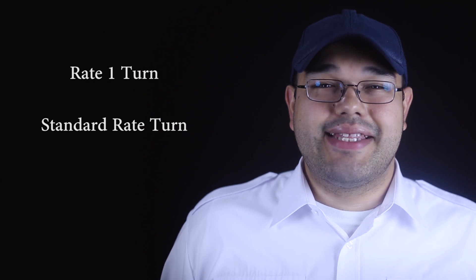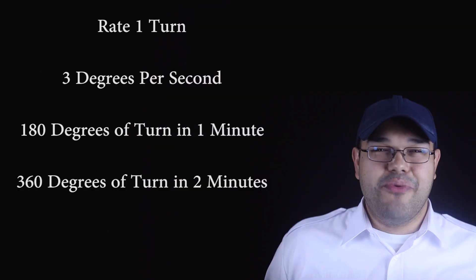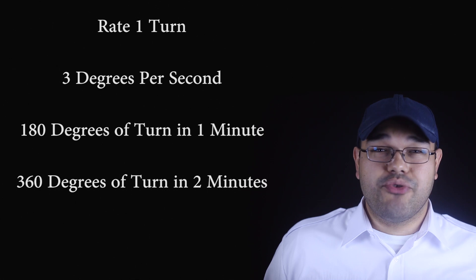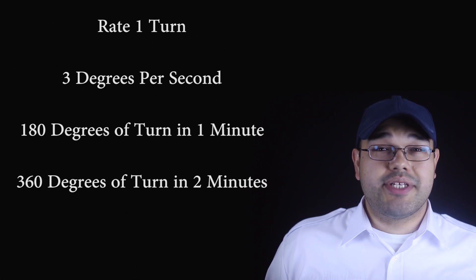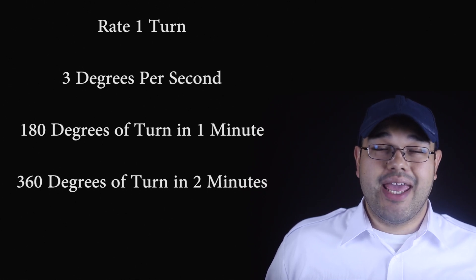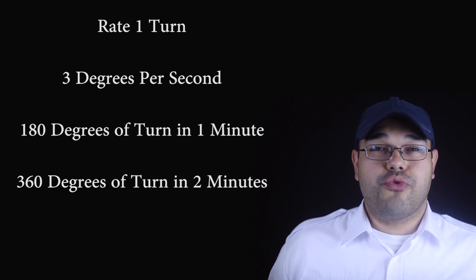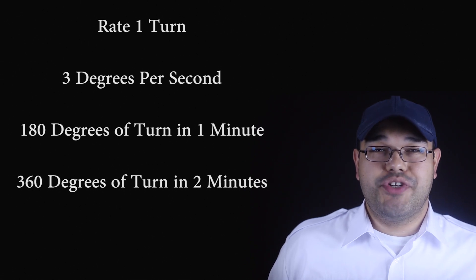Also known as the standard rate turn, a rate 1 turn is a turn with a heading change of 3 degrees per second, which results in a full 180 degrees of turn in 1 minute, or a full 360 degrees of turn in 2 minutes. Note that a rate 1 turn doesn't refer to a specific angle of bank — the bank angle required for a coordinated turn at a specific rate will vary with true airspeed. Higher airspeeds require larger bank angles.